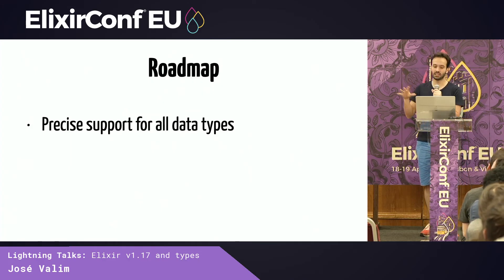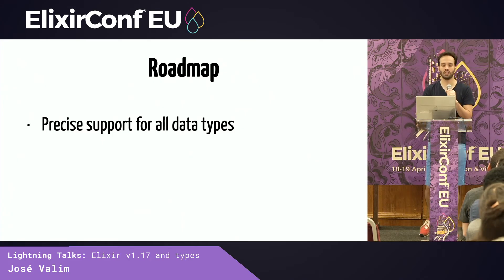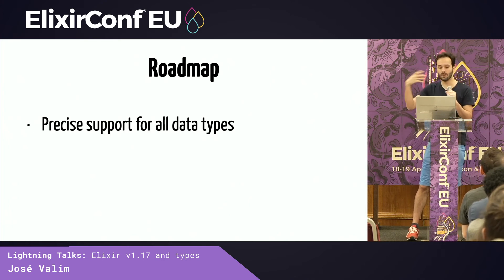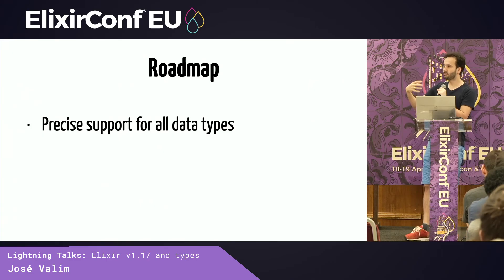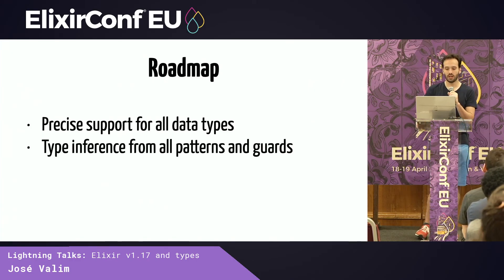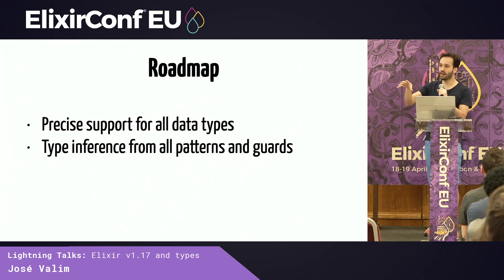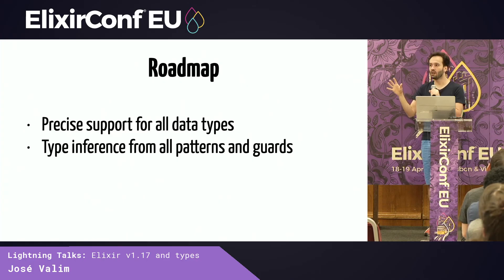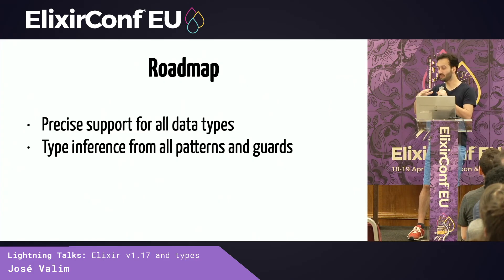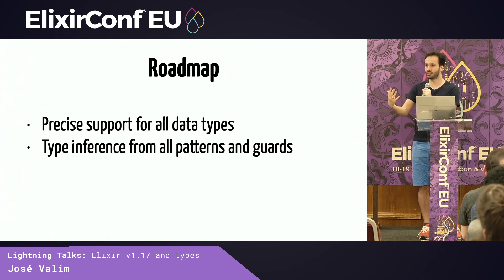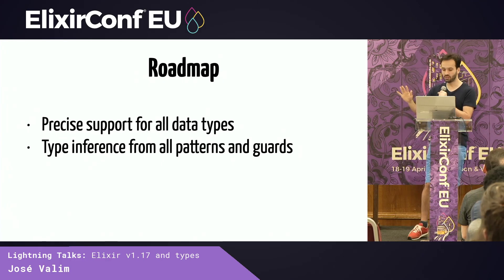The roadmap after Elixir 1.17 is out: we need to support all data types — lists, tuples, references, PIDs, anonymous functions — so the type system can handle all data types in the language. Then we'll look at all patterns and guards in your code to get as much information as possible to find bugs without you changing a single line. Think of it as if Dialyzer is now running all the time as you compile your code — not the same thing, just a comparison — but with good error messages and a good user experience.